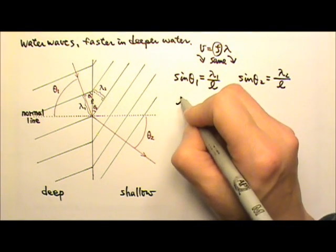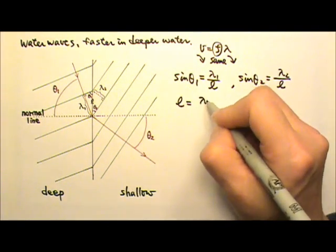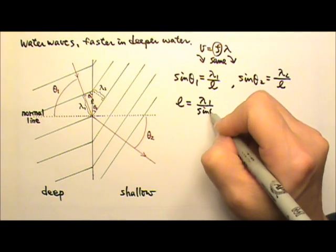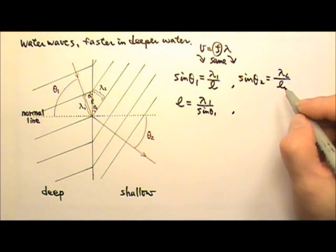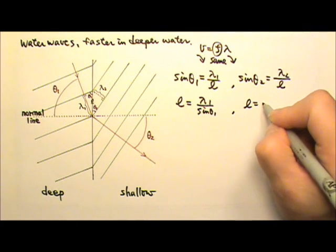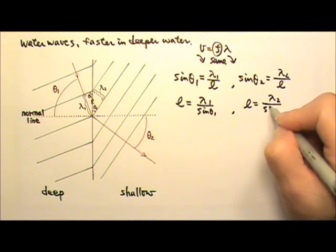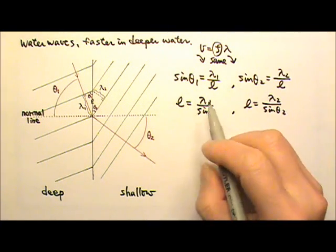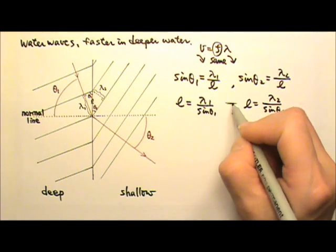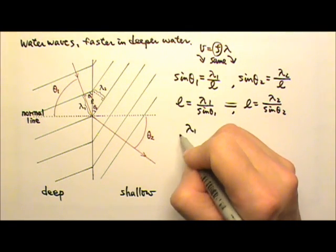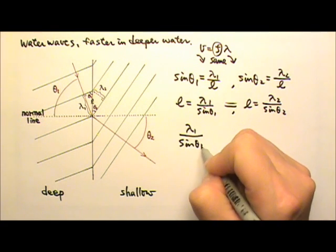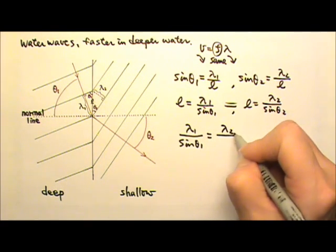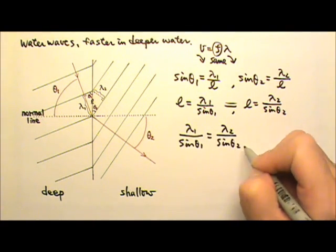So we can write L equals lambda 1 divided by sine theta 1, and on this side we have L equals lambda 2 divided by sine theta 2. And since the two L's are the same, these two sides are equal, which means lambda 1 over sine theta 1 equals lambda 2 over sine theta 2.